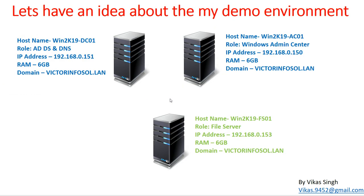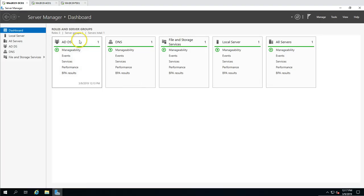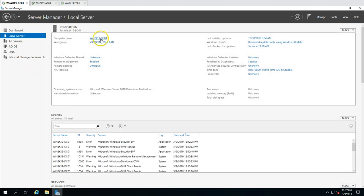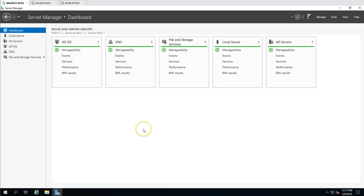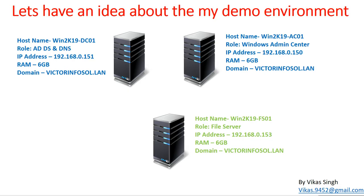This is my demo environment for this video. I have three virtual machines acting as servers. The first machine is win2k19dc01, which is running Active Directory and DNS services. Its IP address is 192.168.0.151 with six gig of memory. My domain name is victimefusall.lan. If I go to local server you can see win2k19dc01 and IP address 151 — this is my Active Directory and DNS server.